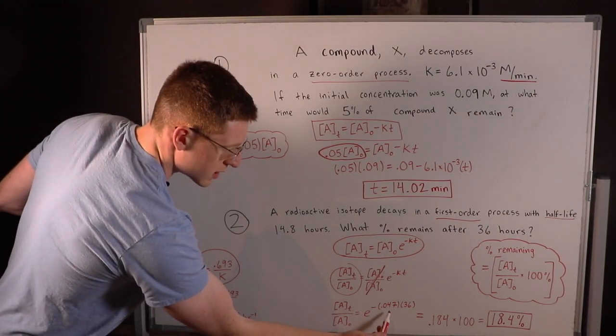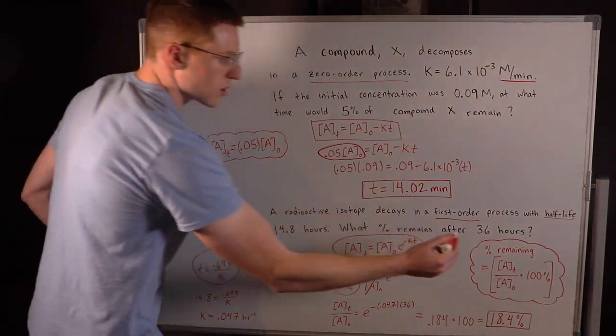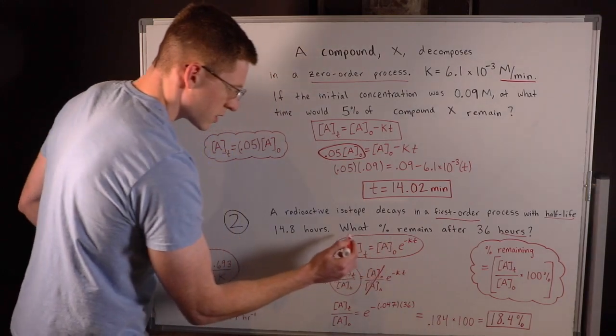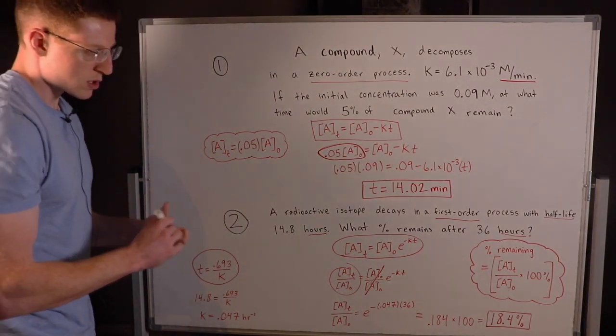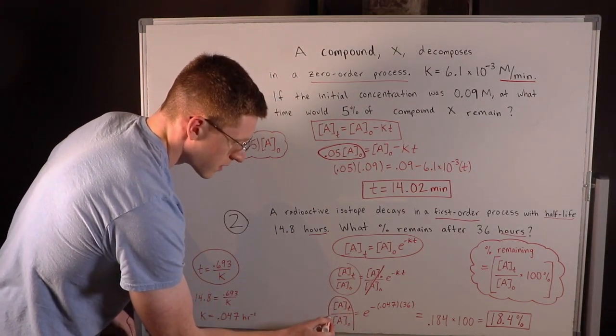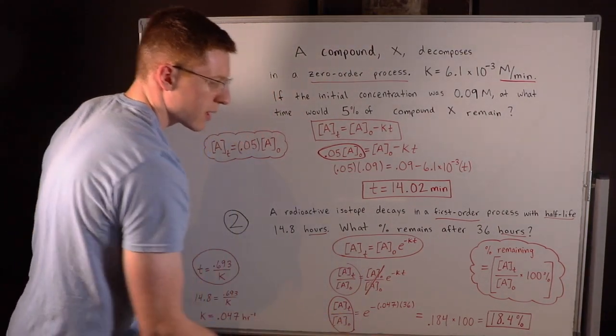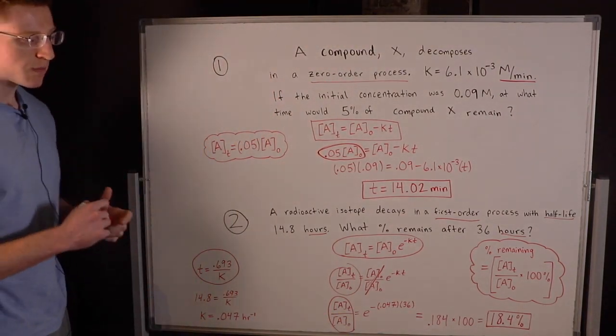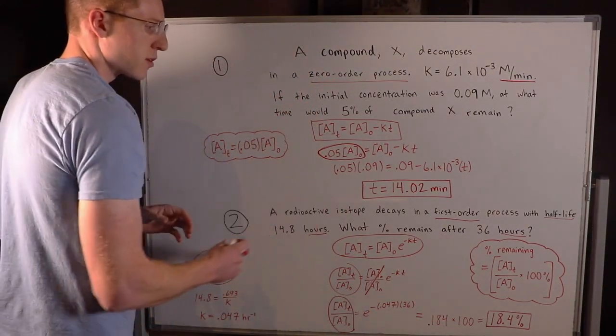So I plugged in 0.047 here. My time was 36 hours. Always make sure your time units match—hours and hours, so we're good here. No conversions necessary. Once you type this into your calculator, you get for this term here, remember this represents the fraction remaining, 0.184. Then we multiply that by 100 to get a percentage and you end up with 18.4% remaining after 36 hours.